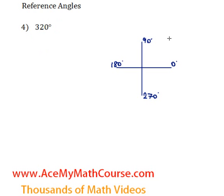So first, let's find in which quadrant we can find 320 degrees.